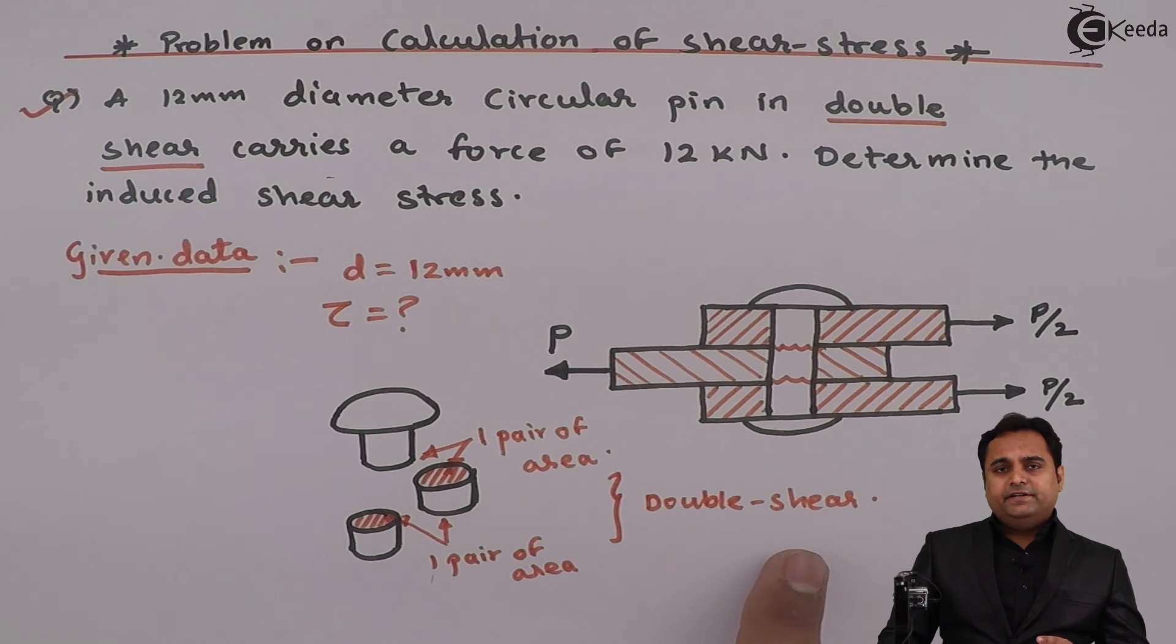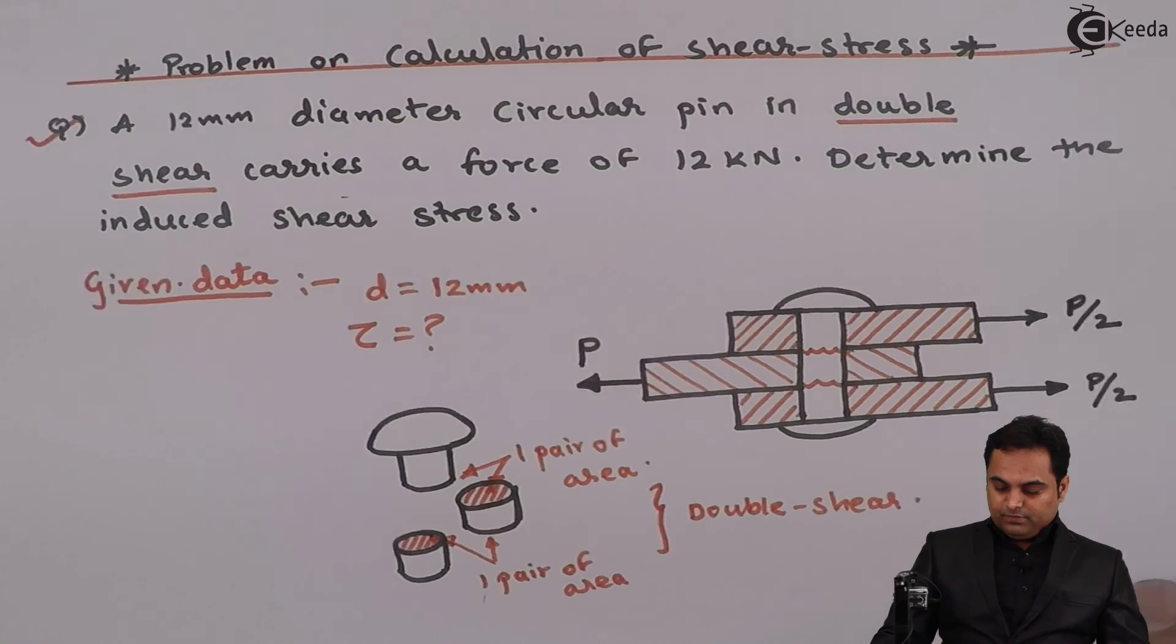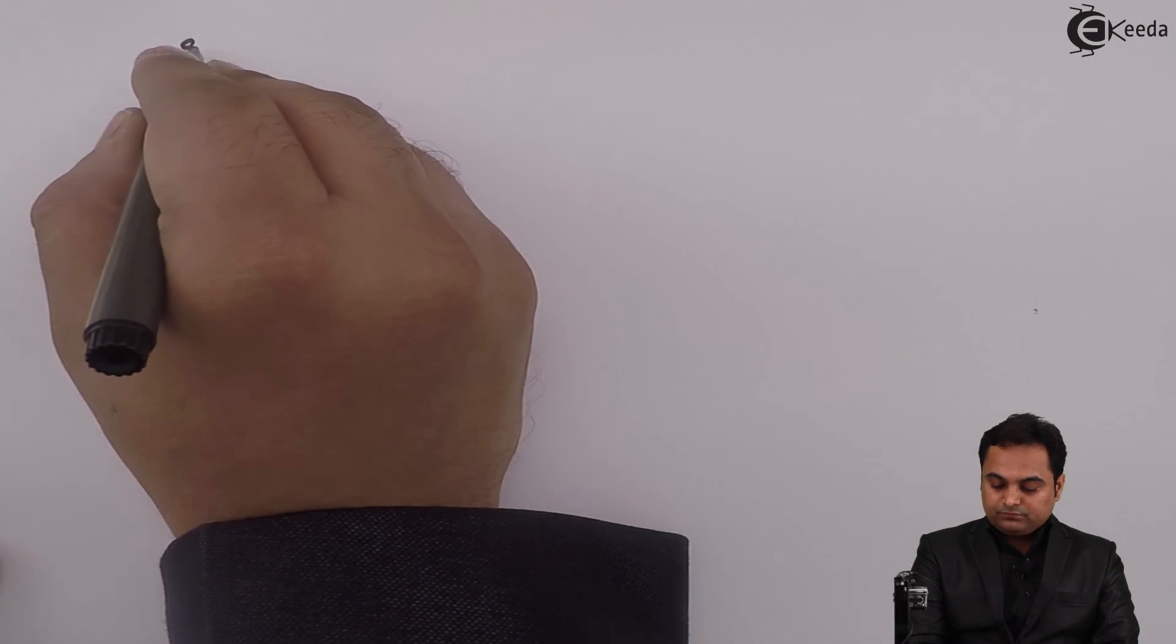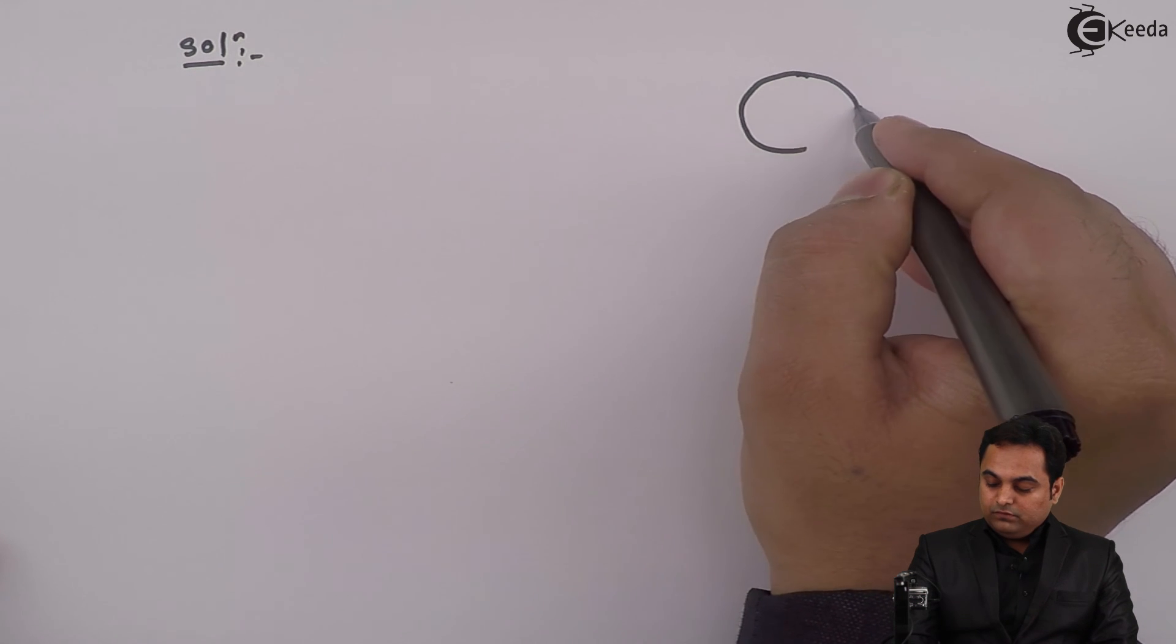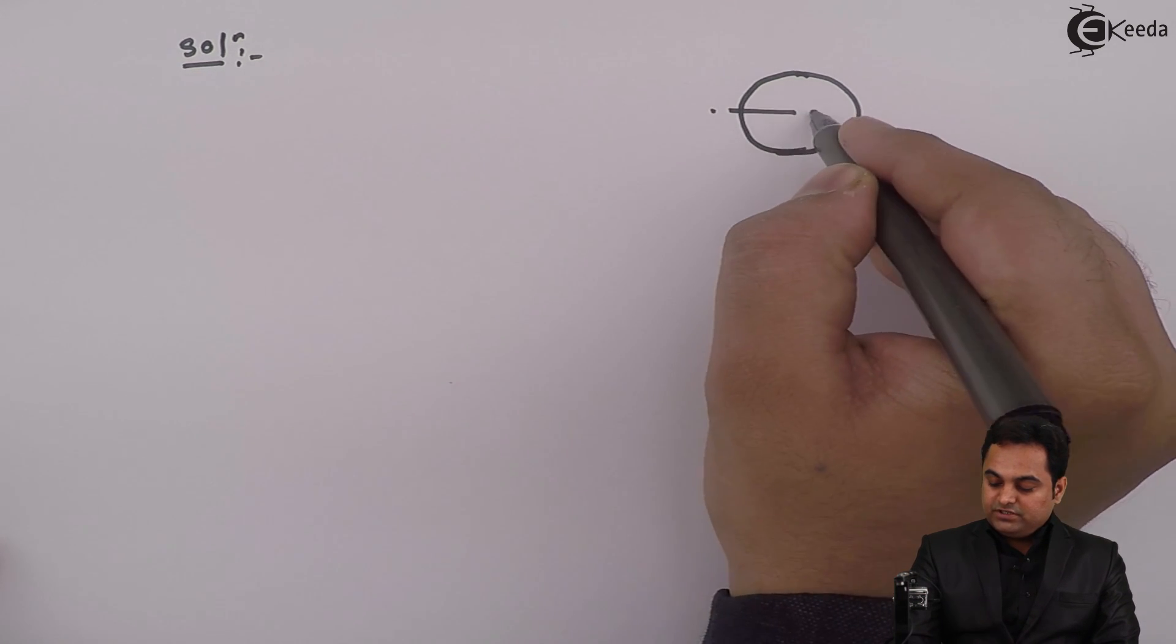As I have told, this is a case of double shear. So the cross section is a circle.